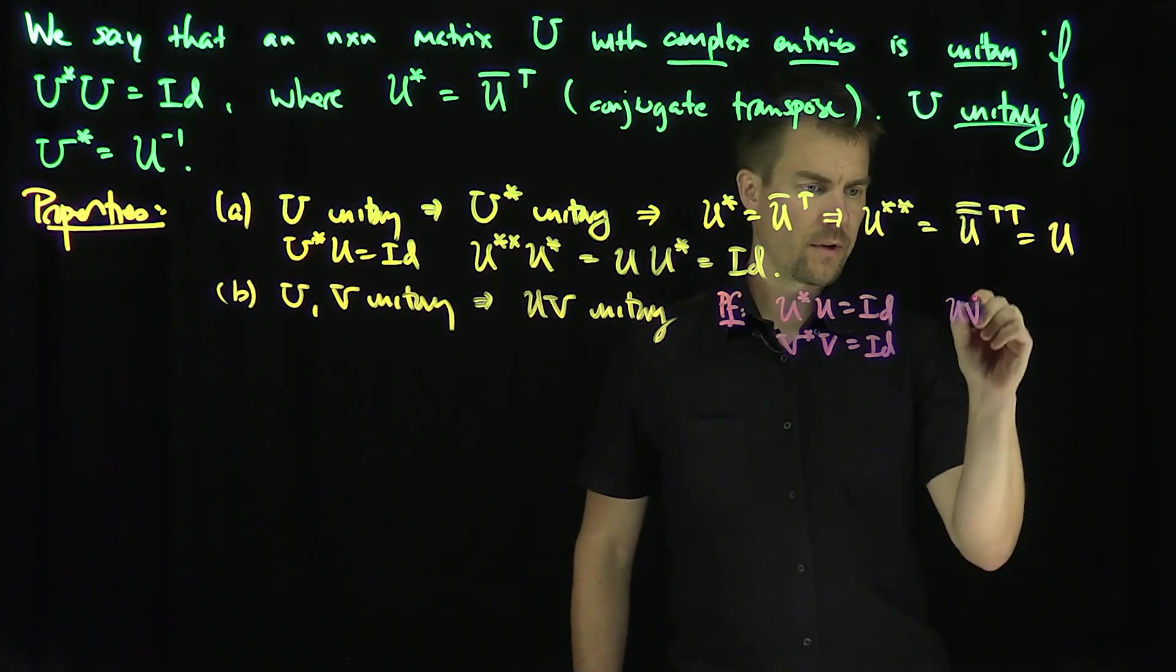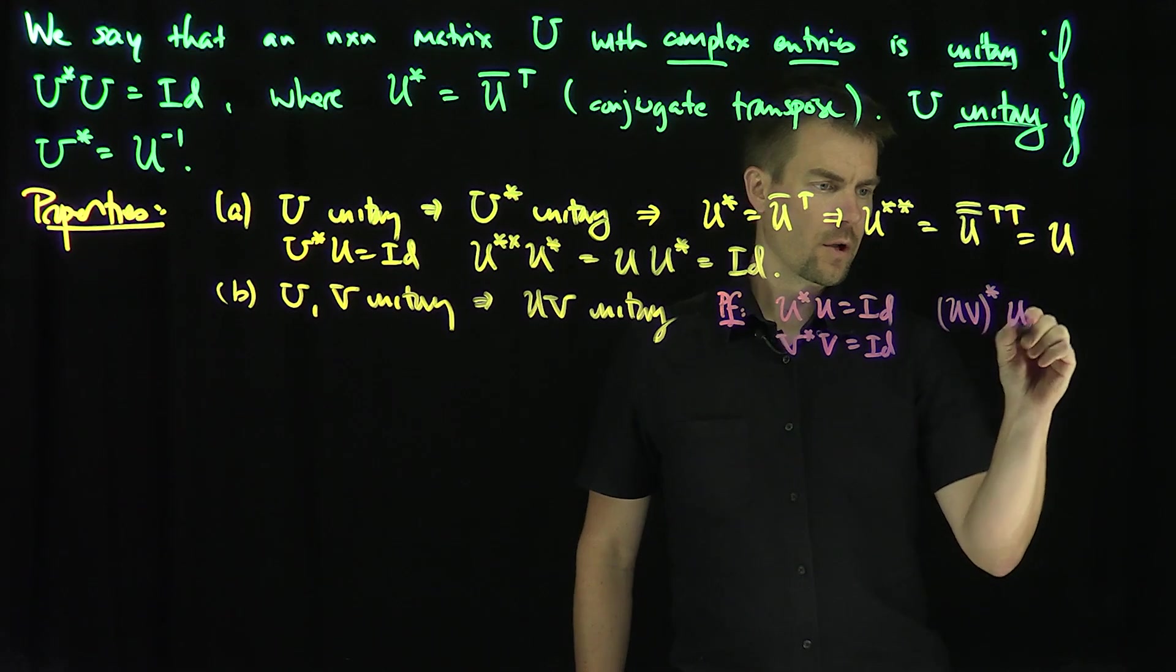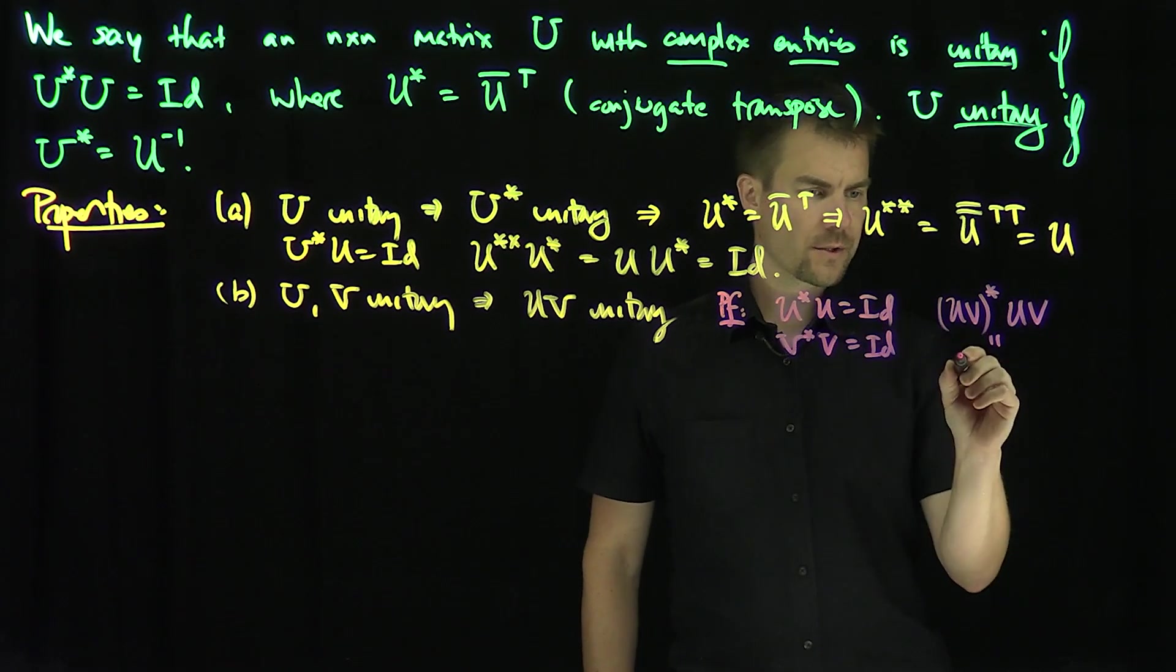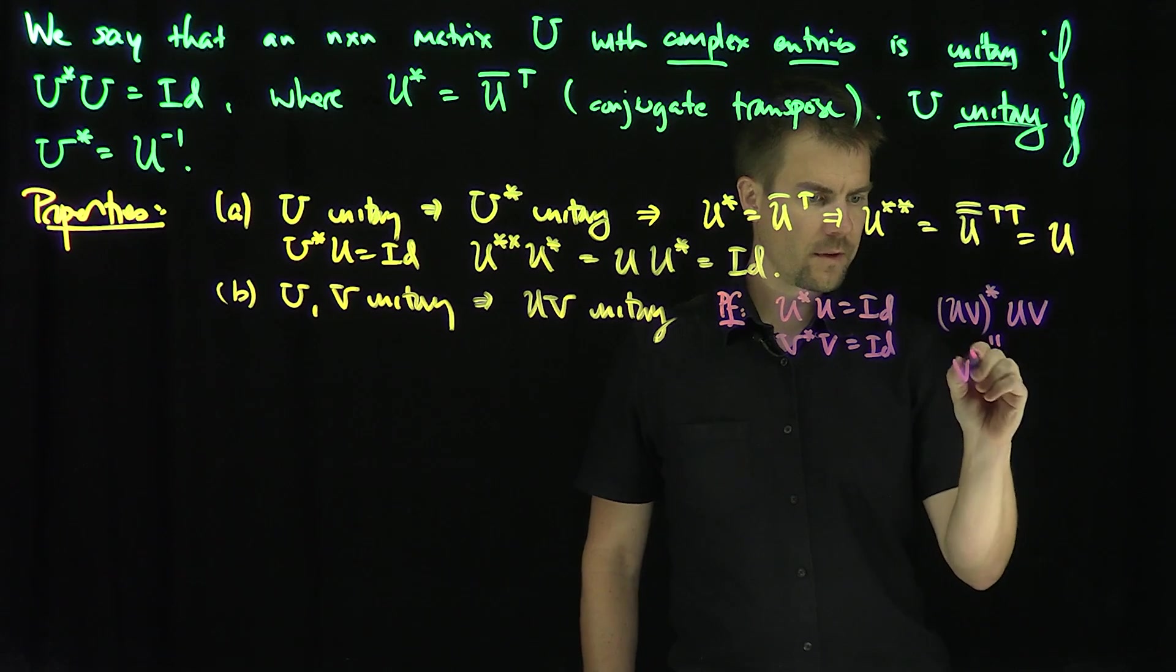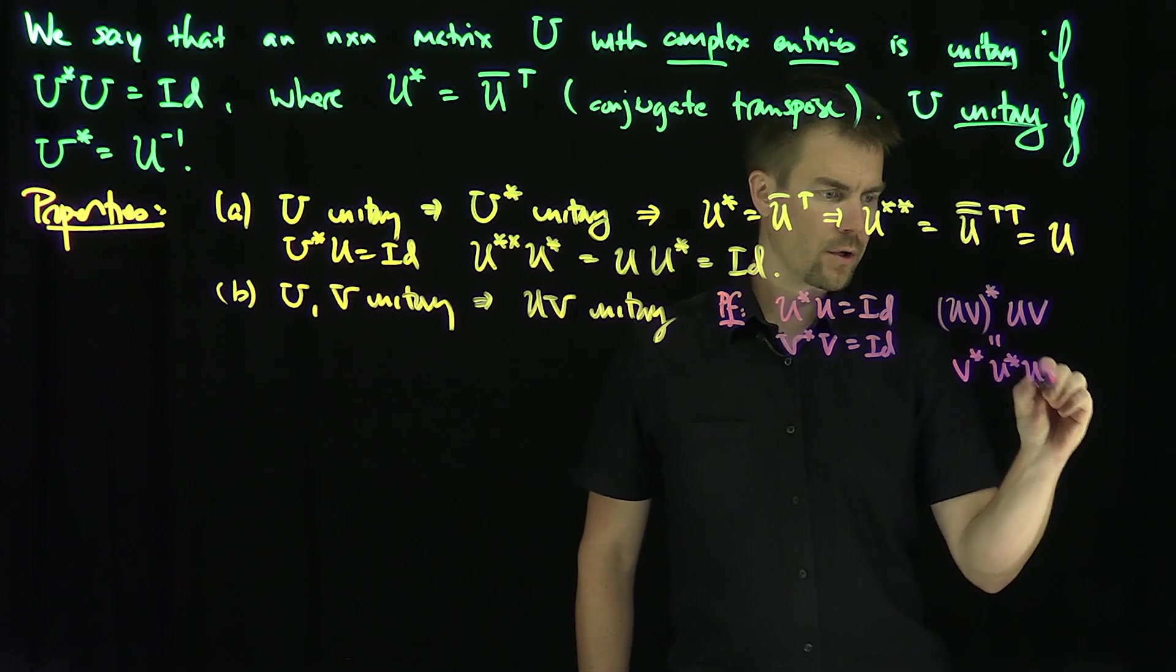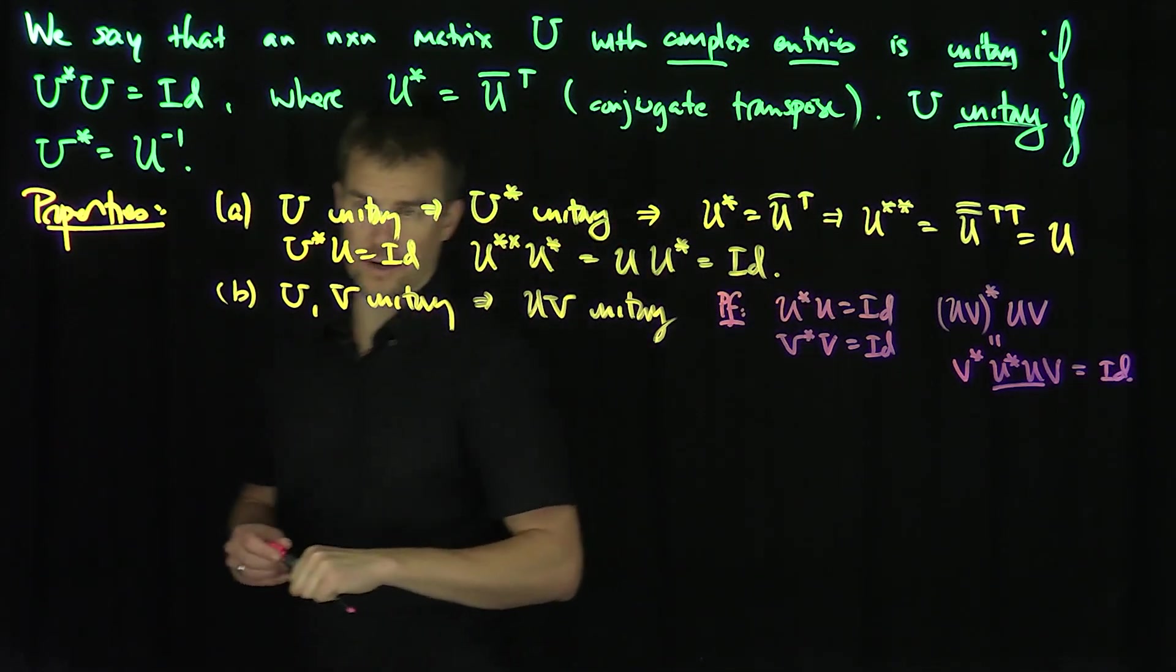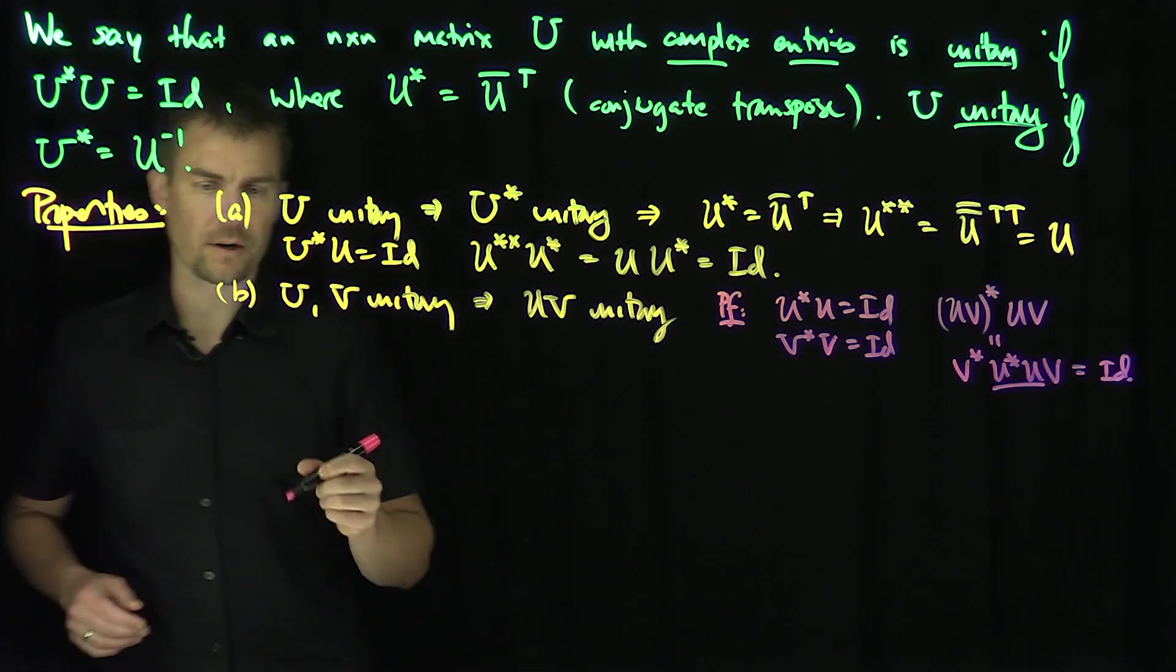Well, I know that U star U is equal to the identity, and V star V is equal to the identity. And so what can I say about U V star, U, V? Well, by properties of star, this is going to be V star, U star, U, V. And of course, the inside is the identity, so I'm just going to get the identity, so that proves the product of unitary is unitary.